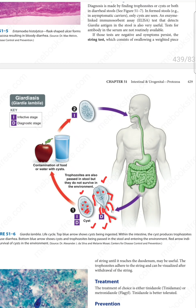For diagnosis: the ELISA test detects the Giardia antigen in the stool. We also test for antibody in the serum. There is a PCR-based test which detects Giardia nucleic acid in the stool. If these tests are negative and symptoms persist, you can perform a string test, where the patient swallows a weighted piece of string that goes into the duodenum; trophozoites adhere to it and can then be visualized after withdrawal of the string.